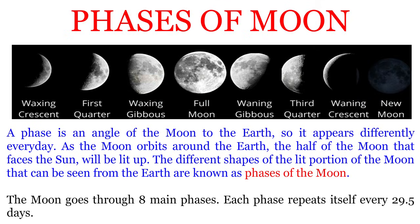A phase is an angle of the Moon to the Earth, so it appears differently every day. As the Moon orbits around the Earth, the half of the Moon that faces the Sun will be lit up. The different shapes of the lit portion of the Moon that can be seen from the Earth are known as phases of the Moon.